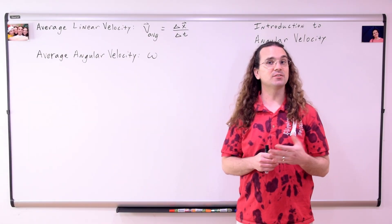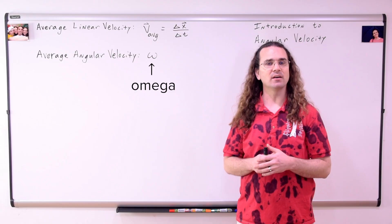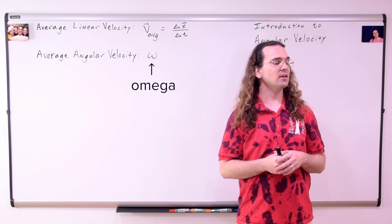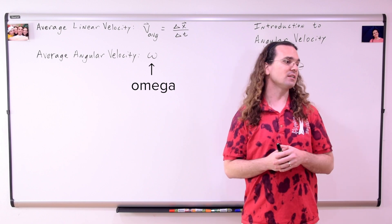The symbol for angular velocity is the lowercase Greek letter omega, which looks a lot like a curly w. Billy, what do you think the equation for average angular velocity is?